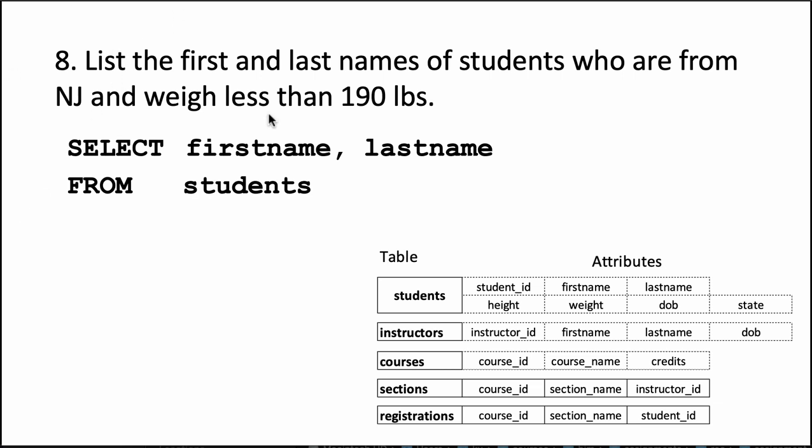In the earlier question, question number 7, it said OR. This time it says AND, so in order for a student to be included in the result, that student should meet both of these conditions.